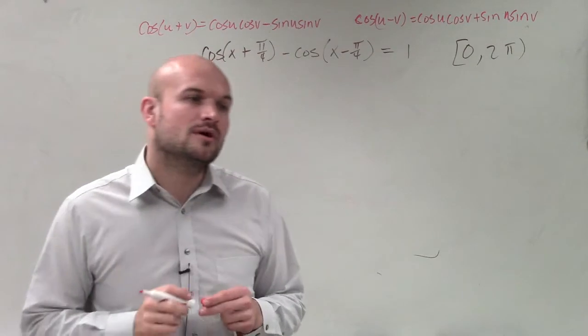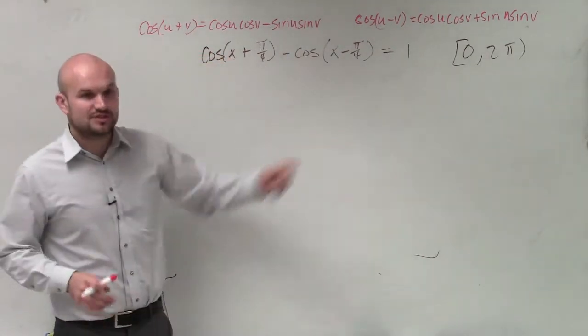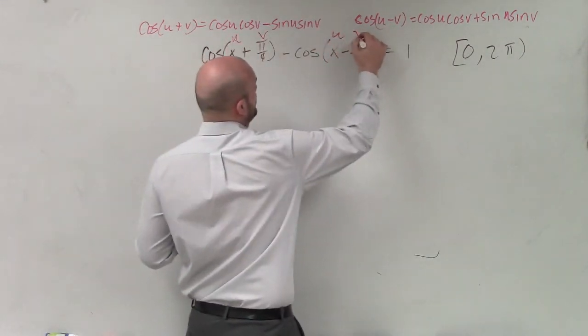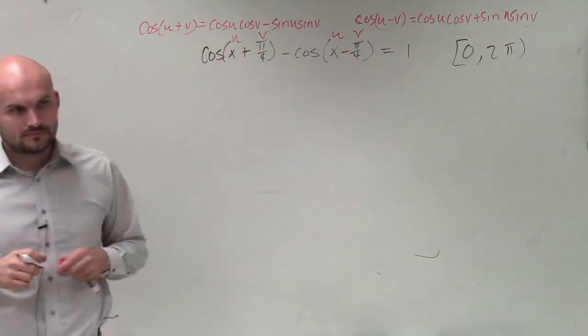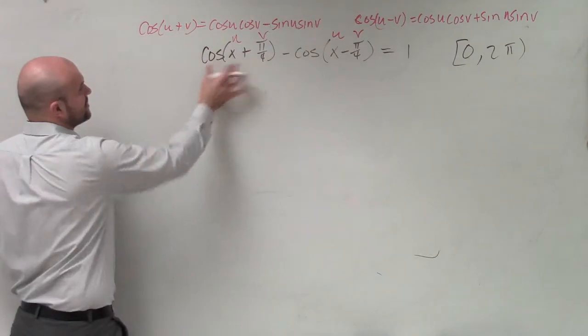But now what we need to do is be able to substitute our values in. So what we need to do, since we're going to be doing this twice, we need to label our u and our v. All right? So now let's go ahead and plug in our values for each one of these.